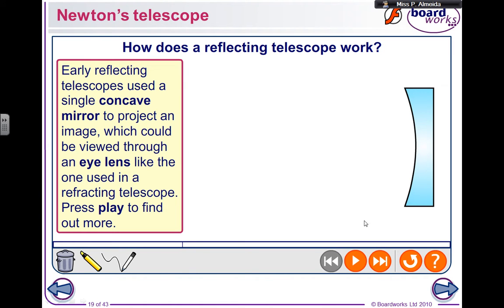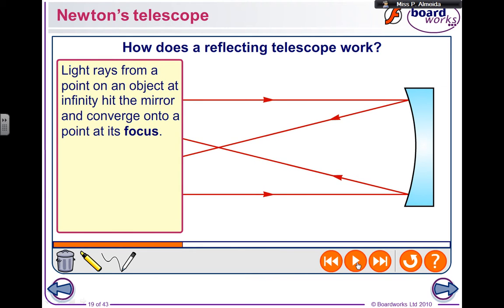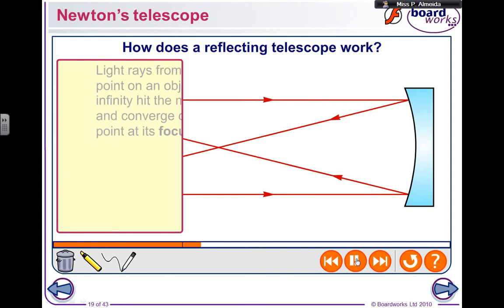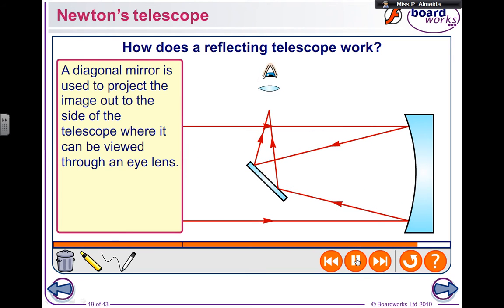Let's look at this animation. The parallel rays come in and focus on a point. Using this principle, I can build the first and most simple reflecting telescope: the Newtonian telescope. Before the rays actually converge into a focus, a flat mirror sends those rays through a lens where you can then see the object. That is Newton's telescope.